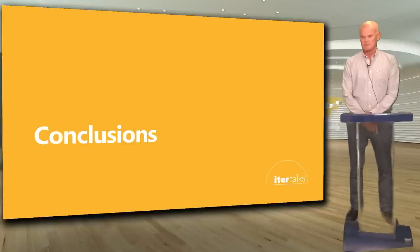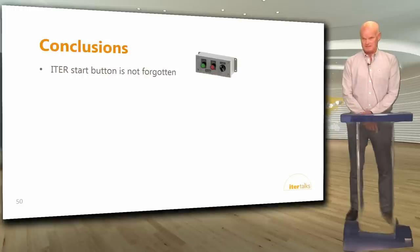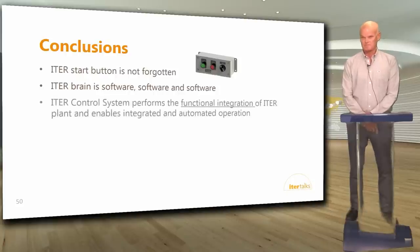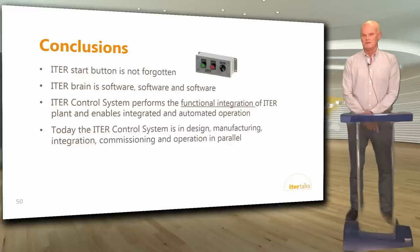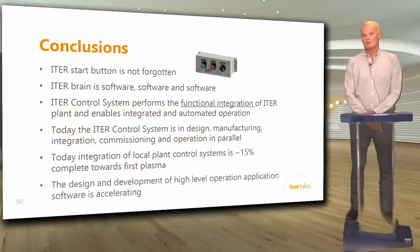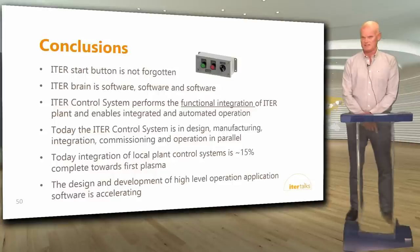Time to wrap up. First conclusion: we have not forgotten the ITER start button. Second: the ITER brain is software, software and software. Third: the ITER control system performs the functional integration of the ITER plant and enables integrated and automated operation. Today the ITER control system is in design, manufacturing, integration, commissioning and operation in parallel — all life phases simultaneously. Integration of the local plant control system is 15% complete towards first plasma, and the work to design and develop high-level operation application software is accelerating.